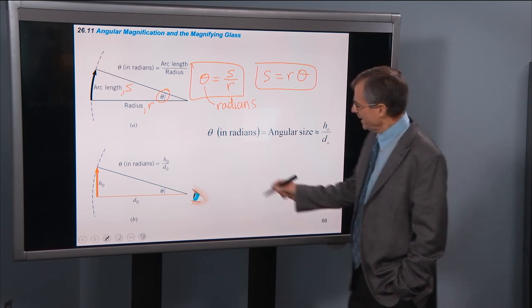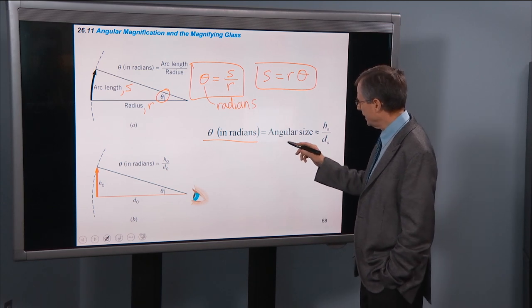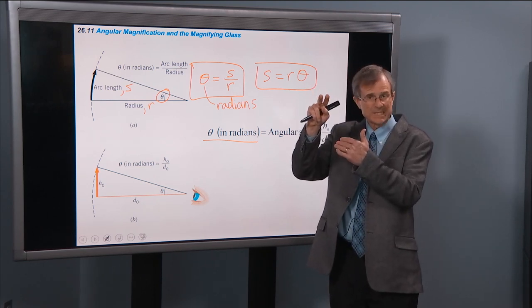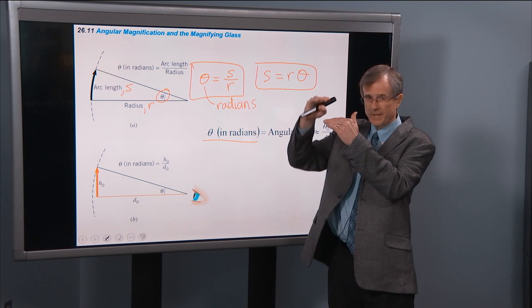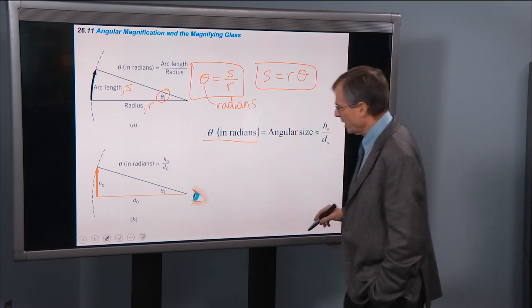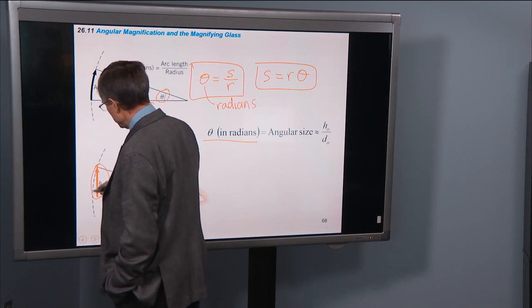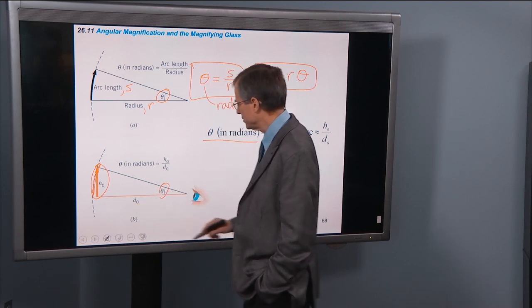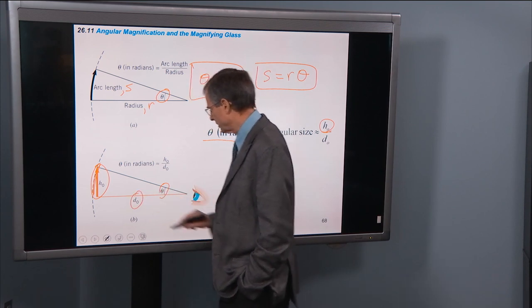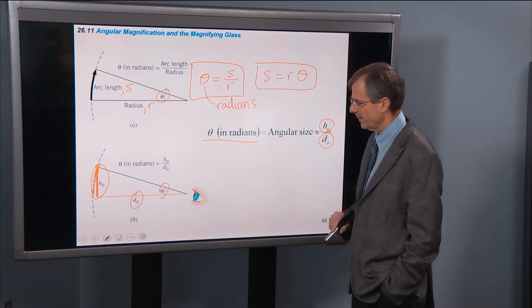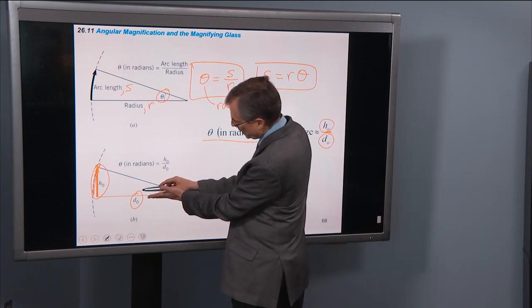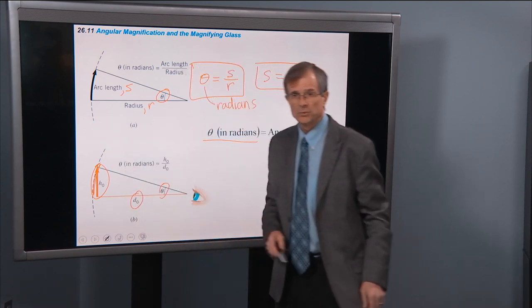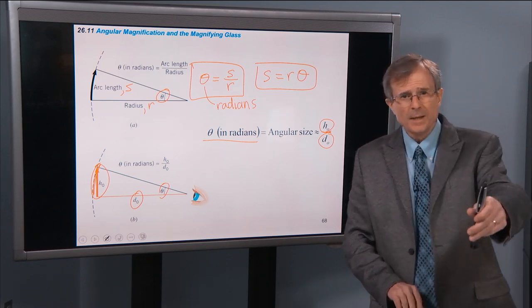So the angle measured in radians is called the angular size of an object. The bigger the angular size is, the better you can see it, because the more of an angle it takes up. So that's going to be approximately equal to the height of the object, which is close to the arc length if this angle is small. So as an approximation, the height of the object divided by the distance of the object, which replicates the radius. As long as that angle theta is small, then H0 will be a good approximation to the arc length S, and D0 will be a good approximation to the radius. So the angular size is the height of the object divided by the distance.